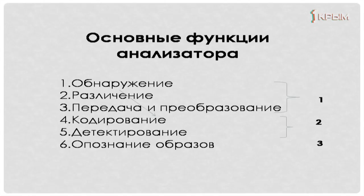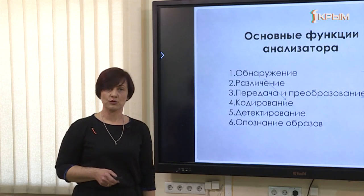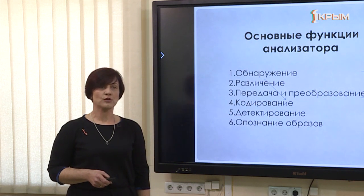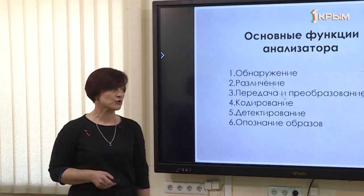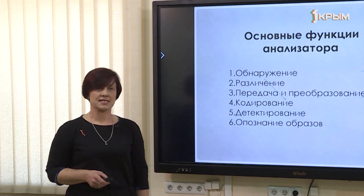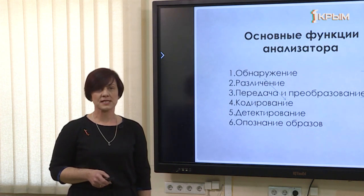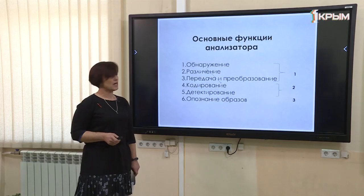Давайте назовём функции сенсорной системы, которые подходят для всех анализаторов. Основные функции анализатора: обнаружение и различение — эту функцию берут на себя нейроны, они принимают раздражение и классифицируют их, поэтому наши рецепторы могут быть и внешними, и внутренними. Кодирование берут на себя чувствительные нейроны — они создают определённый код, который упрощает и делает наше восприятие быстрым и чётким. Детектирование — это создание определённого образа, который потом будет узнаваться всё быстрее и быстрее.